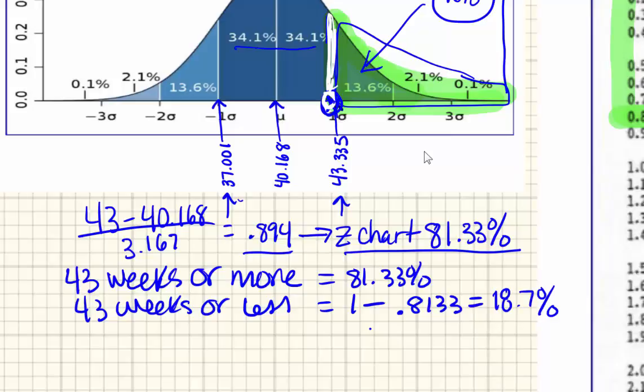If we're talking about 43 or more, that's everything over here, it's almost 19%, so 18.7%. So if it's everything over here, it's 81.33%.